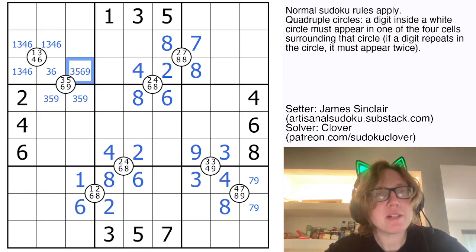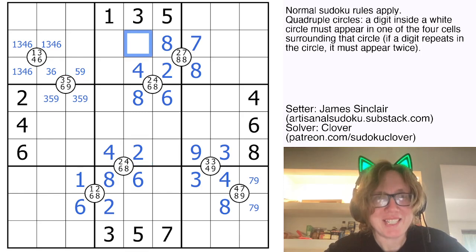This is in a region with a one, three, four, six quadruple, but it's not on that quadruple. So I'm going to eliminate three and six from that cell. Now I'm going to need to do a bit of Sudoku to continue this puzzle. So let's go ahead and do that.